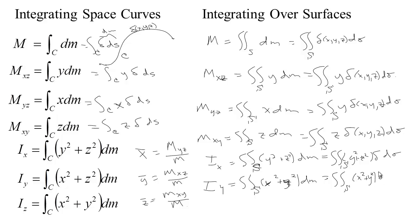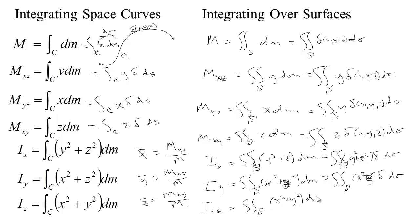That formula should be x squared plus z squared times density d sigma for finding the moment of inertia about the y-axis, and x squared plus y squared for the moment of inertia about the z-axis. The cool thing is that the formulas are the same — it's just the type of integral we're doing that's different.